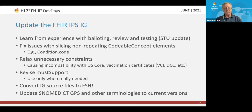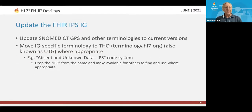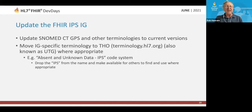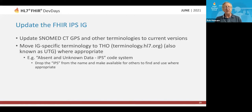We're also working on updating our terminologies, including the SNOMED CT GPS to their current versions. We're also going to move some IG-specific terminology out of being siloed in our IG and out to the THO — terminology.hl7.org — our new source of truth for HL7 vocabulary, also known as UTG, Universal Terminology Governance. We'll do that wherever appropriate, particularly our absent and unknown data code system, and try to generalize that and make it available for others to find and use.